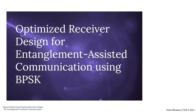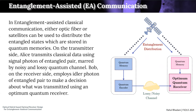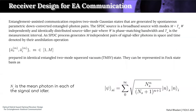Now let's look at the optimal receiver design for entanglement assisted communication using optical hybrid. In entanglement assisted communication, either optical fiber or satellites can be used for distribution of the entangled states which are stored in quantum memories. On the transmitter side, Alice transmits classical data using the signal photon of the entangled pair, which suffers from a noisy and lossy quantum channel. Bob on the receiver side employs the idler photon of the entangled pair to make a decision about what was transmitted using the optimum receiver.